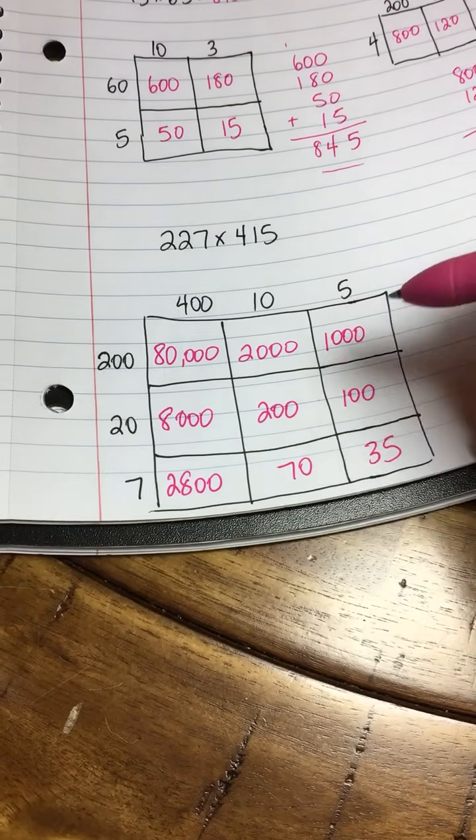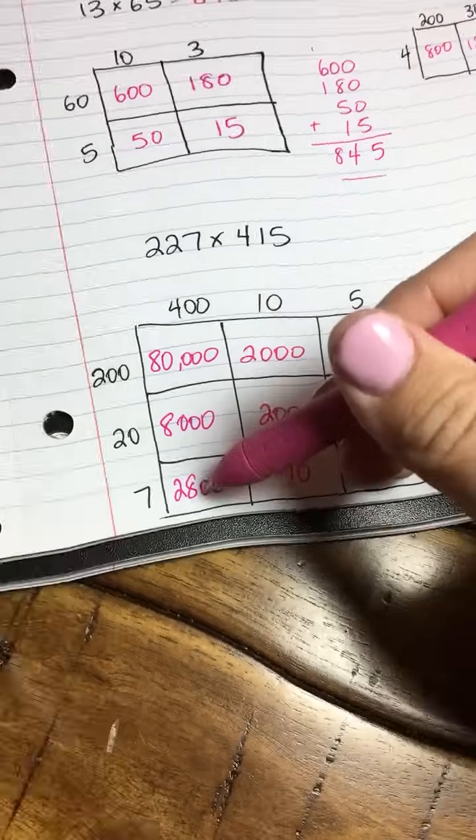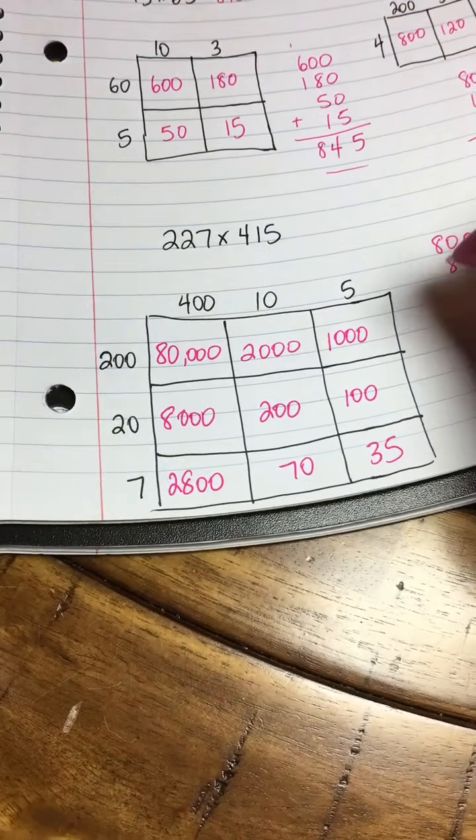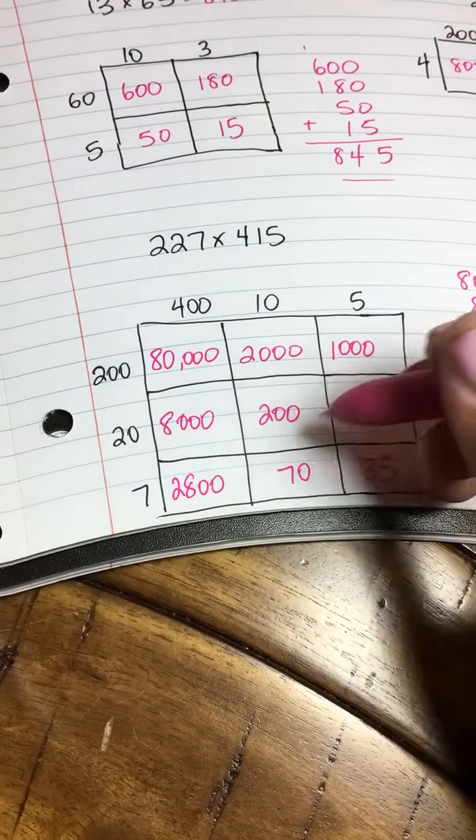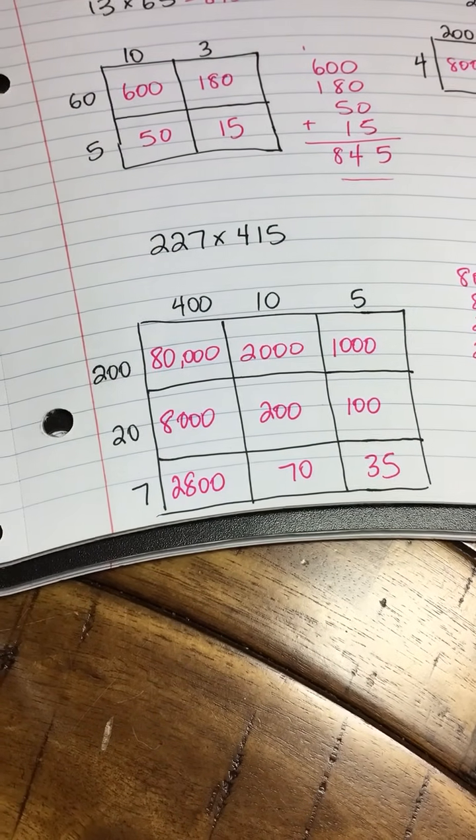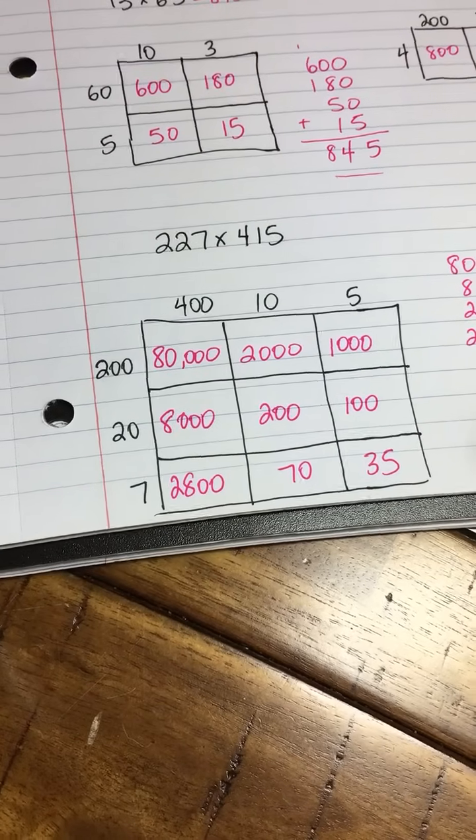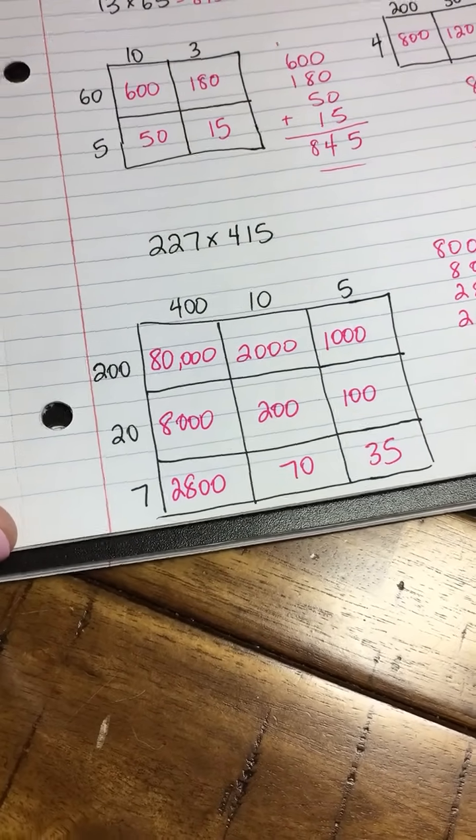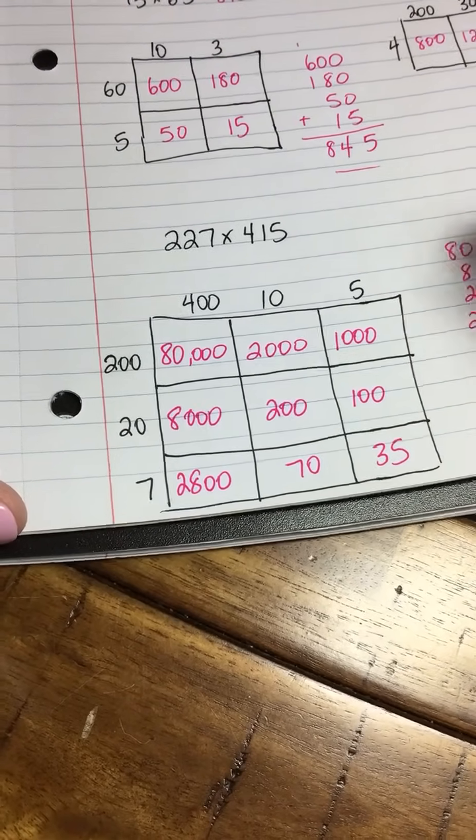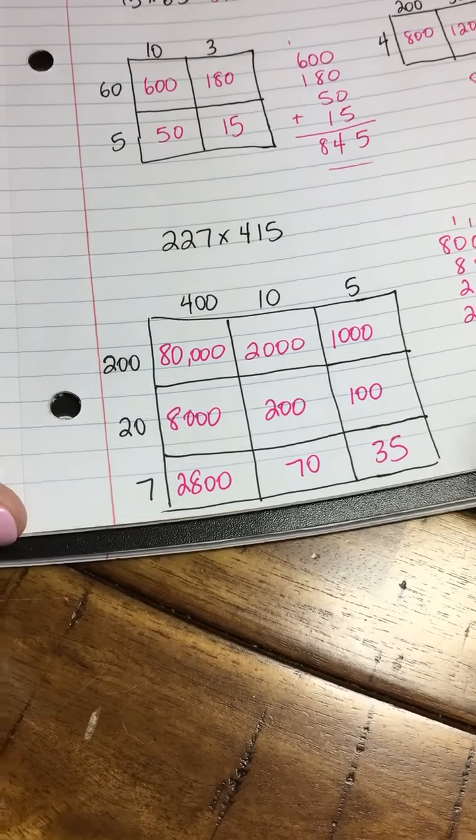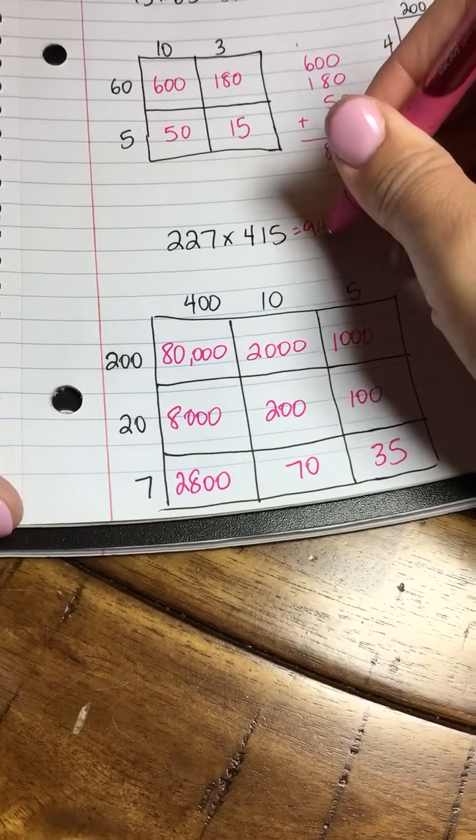Now this one—there's a lot of adding to do. We have to add up all of our smaller products. Let's do 80,000 plus 8,000 plus 2,800 plus 2,000 plus 200 plus 70—whoops, I missed the 1,000 up there—plus 1,000, plus 100, and then 35. Now we're going to add all of this up, so we get 94,205 as our final product.